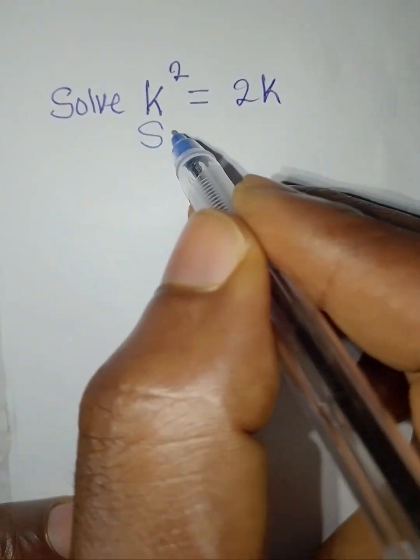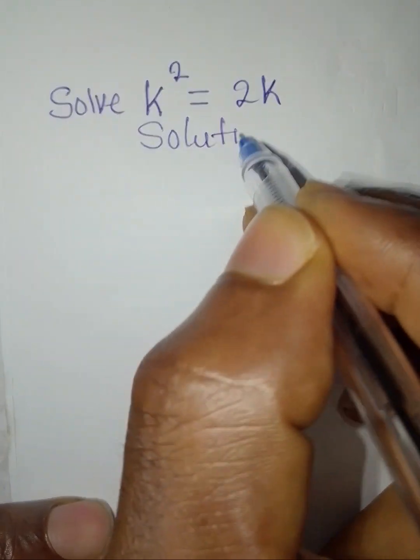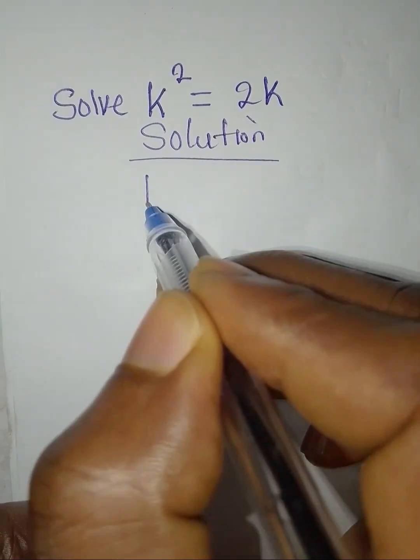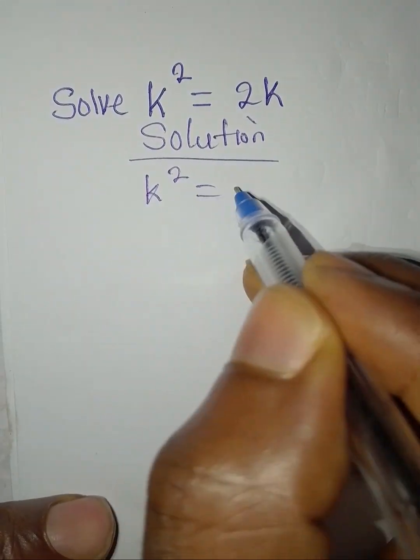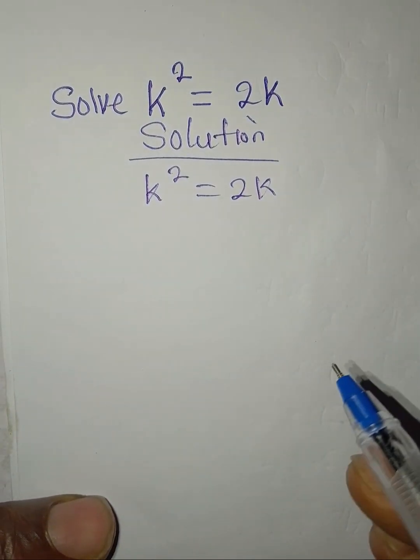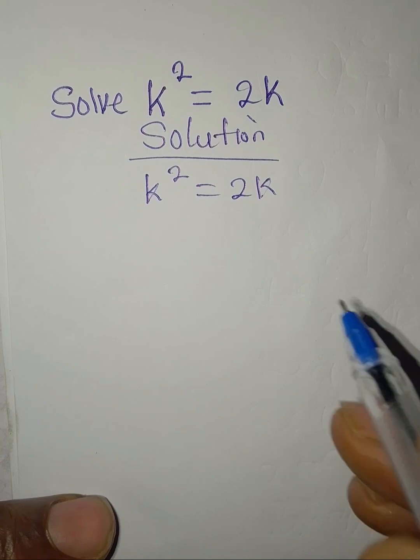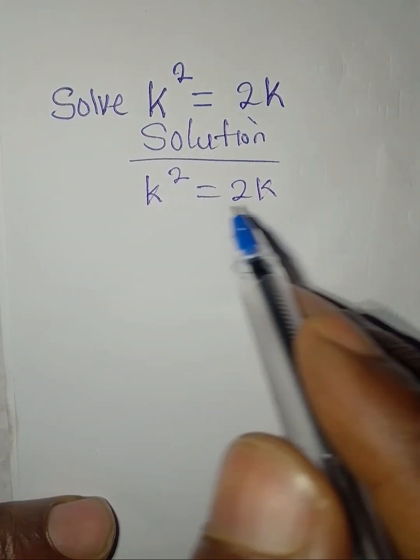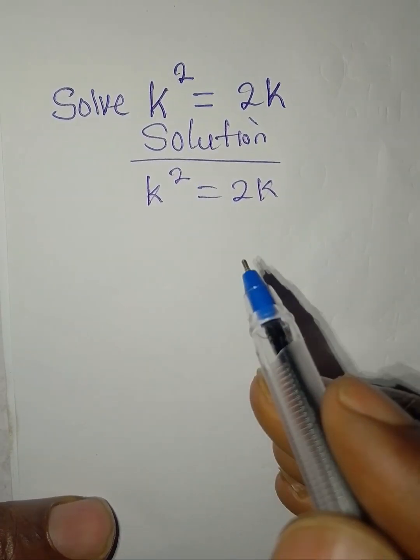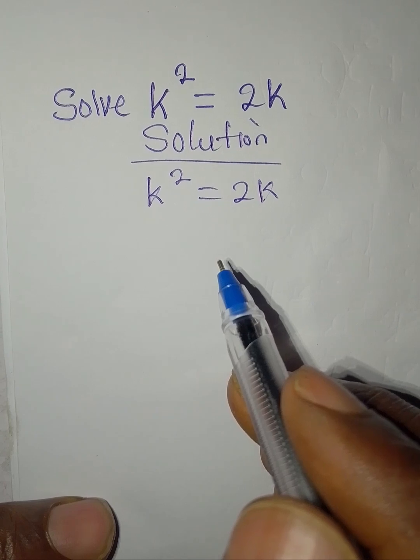Hi, we are to solve this problem here. We have k² = 2k, right? And you will be tempted to divide both sides by k since we have k on two sides, but we do not divide by the variable, okay?